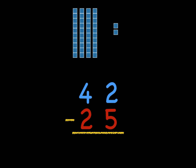but right away we're going to notice that we've got a problem. We can't do two minus five. We don't have enough ones at the top. We can't take away five ones from two ones.